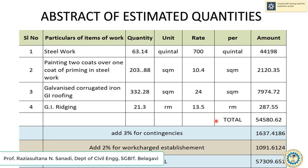After estimating the quantities, you prepare an abstract of estimated quantities by assuming suitable rates. The steel work quantity is 63.14 quintals at a rate of 700 per quintal. Painting two coats gives 203.88 m² at 10.4 per m². For all quantities, multiply by the respective rate to get the amount, then add 3% for contingencies and 2% for work-charged establishment to arrive at the grand total.